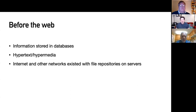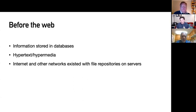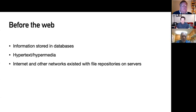Before the web, we had information stored in databases but you had to know how to connect and query each one, and they were standalone — no linked data between them. There was also a concept originally proposed in 1945 called hypertext: a way of exploring documents through links within those documents, more like a web than a linear book. This grew into hypermedia, which included non-text content like images and videos.